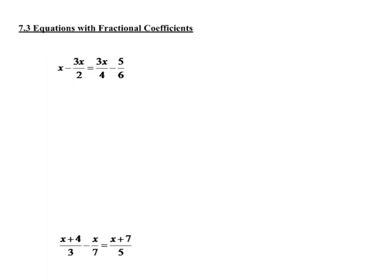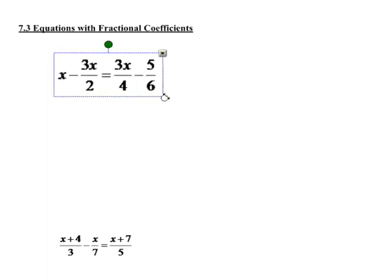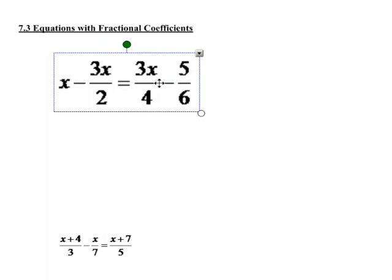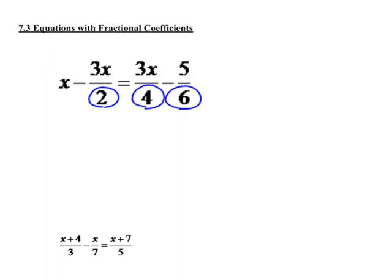Now we could get a common denominator and combine and add like terms and do that, but we'd really rather deal without the fractions if possible. And so in order to do that, what we're going to do is look at our denominators and find a common denominator. What's a number that 2, 4, and 6 all go into? Well, they all go into 12, so we're going to multiply by 12 on both sides.